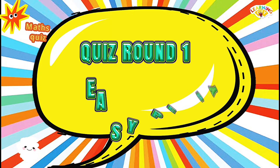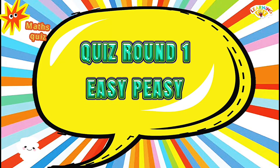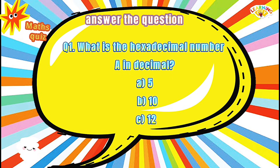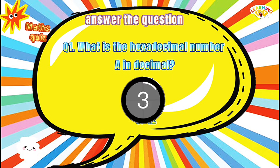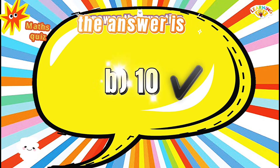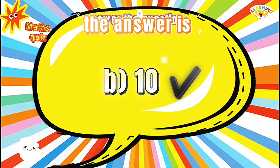Quiz Round 1 — Easy Peasy. Question: What is the hexadecimal number A in decimal? Options: A) 5, B) 10, C) 12. The correct answer is B, 10.